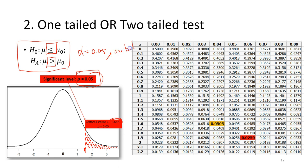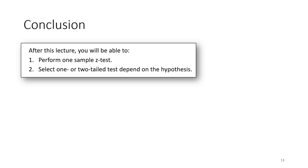In the next lectures, we're going to demonstrate this by using a key test. Now you should be able to perform a one-sample z-test and select one-tail or two-tail test depending on the hypothesis.